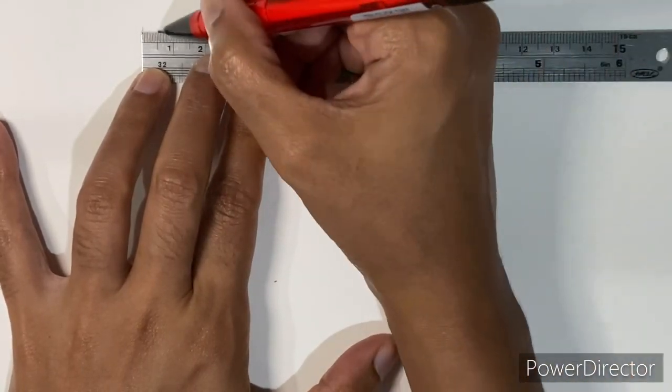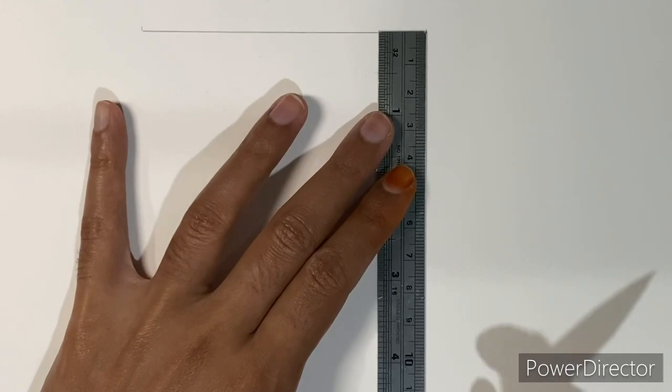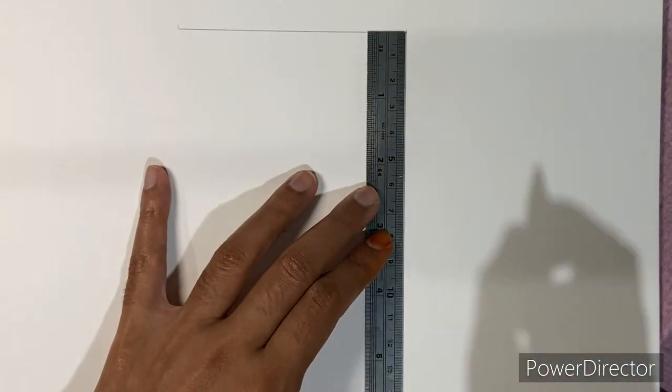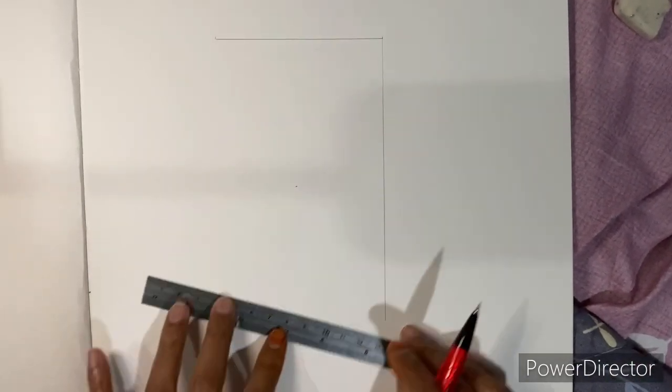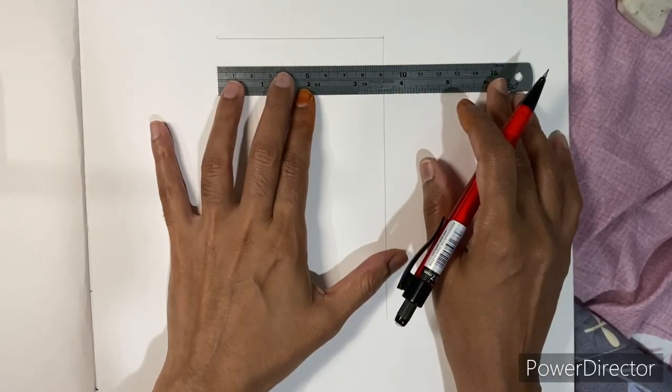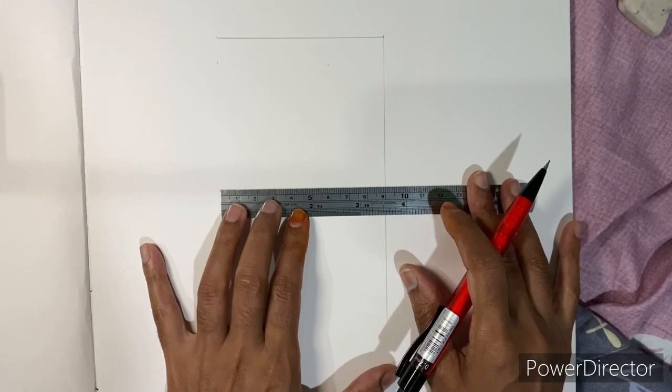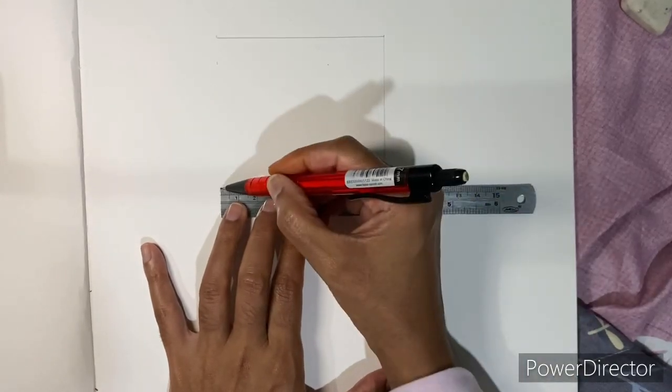So you have 9cm for the width. Draw the 15cm and then you measure to get a straight box.